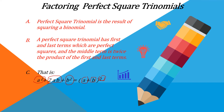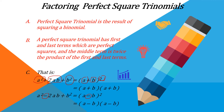The middle term is the product of the first term multiplied by 2. A perfect square trinomial has first and last terms which are perfect squares, and the middle term is twice the product of the first and last terms. And this is equal to quantity (a + b) squared, or (a + b) multiplied by (a + b). Another pattern is a² − 2ab + b² which is equal to quantity (a − b) squared. Since the second term is negative, we should also adapt the negative sign in this square of binomials, and it is simply equal to (a − b) multiplied by (a − b).